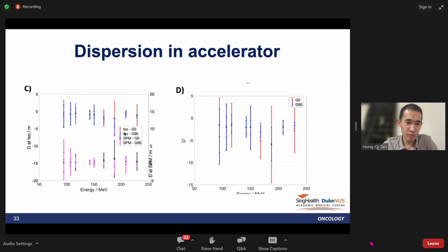This is the dispersion measured at the ISO center and the SPM. In general, they are not the same across all the different gantry angles, and here is the dispersion gradient.